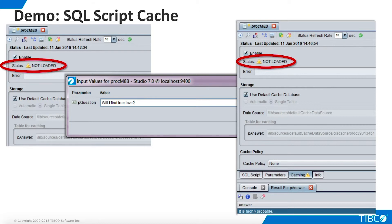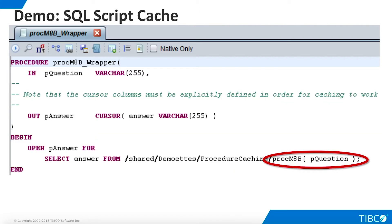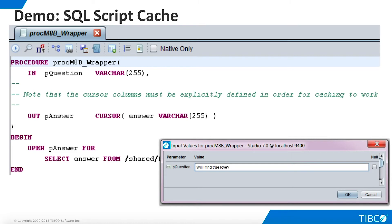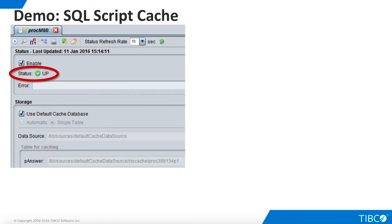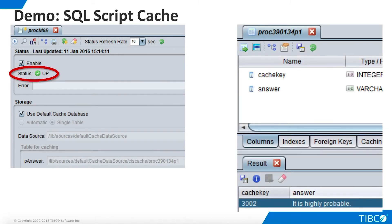Let's try a wrapper procedure and see what happens. Here is a simple script that wraps the procedure we are trying to cache. We execute the wrapper script. Now, when we return to the original script, we see that the cache status has changed from not loaded to up. We examine the cache table and see that it now contains data. Our wrapper script has solved the problem for us. Remember, the wrapper script is only necessary when you run from Studio. It is not necessary for caching when the script is executed by an external client.